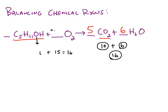That means I need a coefficient of 7.5, because 7.5 times 2 gives me the 15 more oxygens I need.